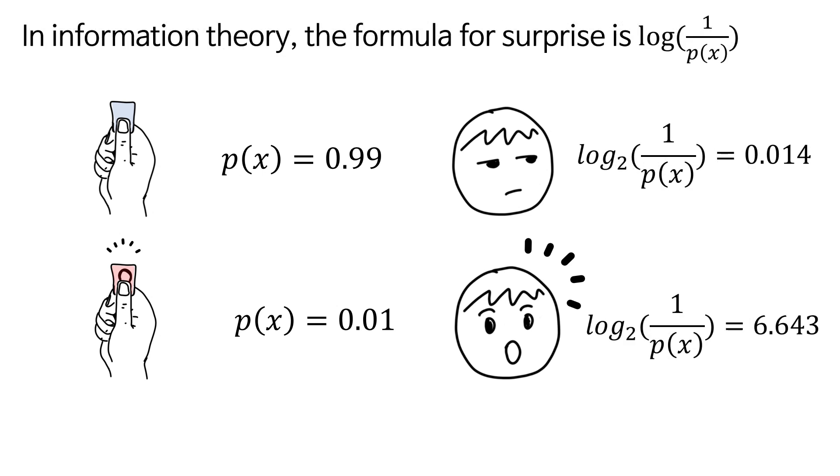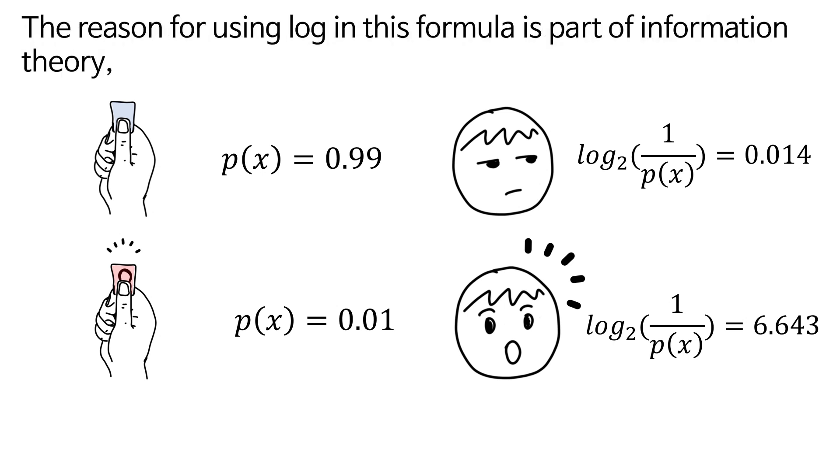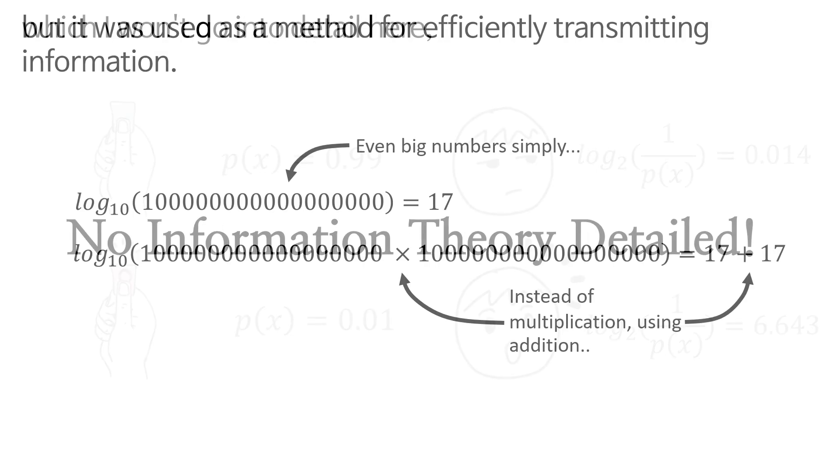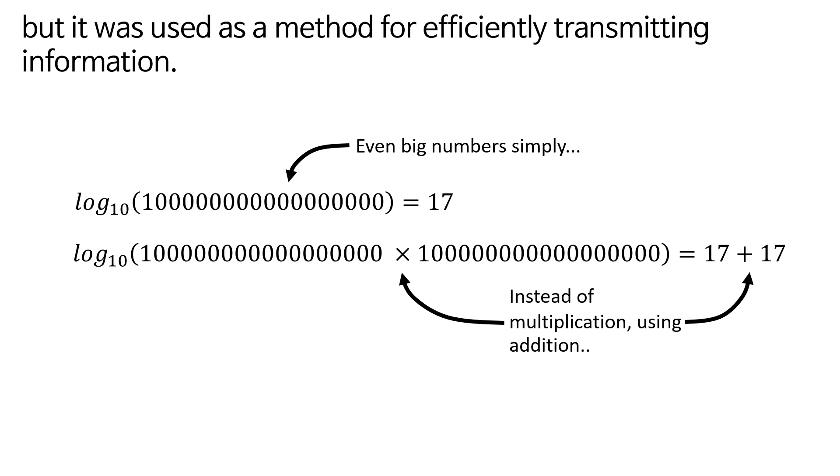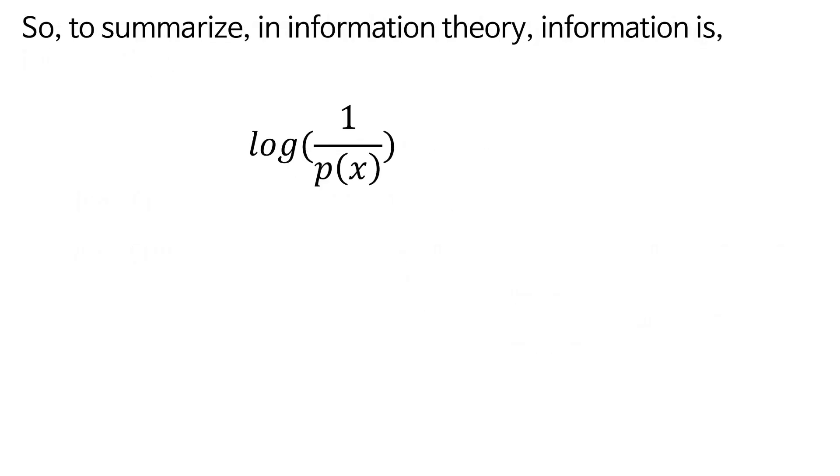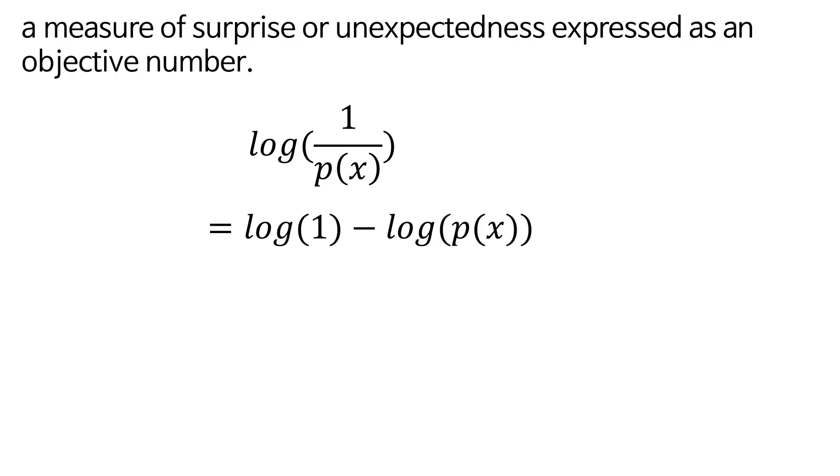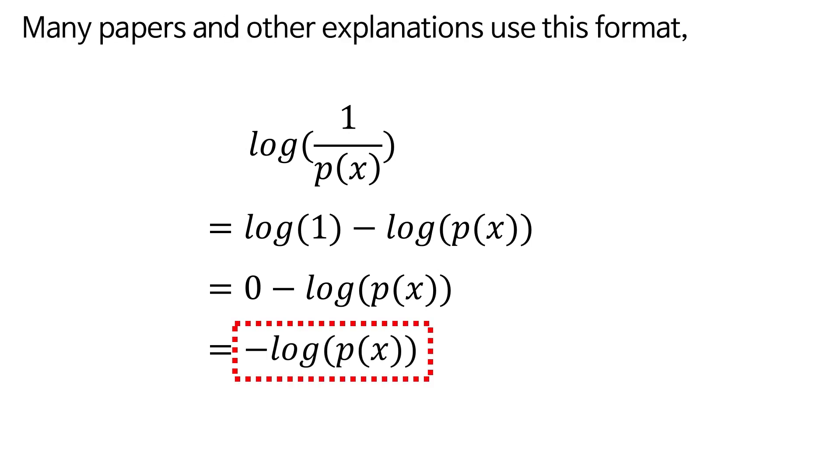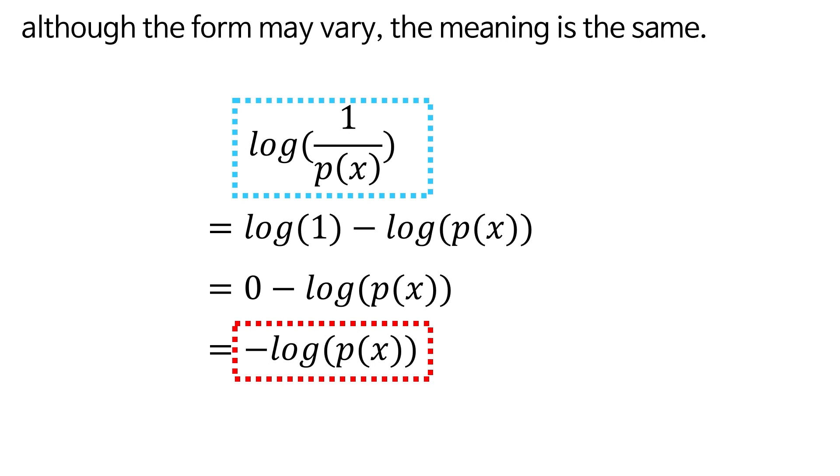In actual information theory, the formula for surprise is log(1/p(x)). The reason for using log in this formula is part of information theory, which I won't go into detail here. But it was used as a method for efficiently transmitting information. So, to summarize, in information theory, information is a measure of surprise or unexpectedness expressed as an objective number. You can think of it as a degree of surprise. Many papers and other explanations use this format. Although the form may vary, the meaning is the same.